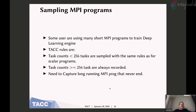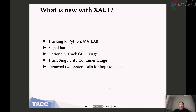I've discovered that people are using short MPI programs to train deep learning engines. Tasks with fewer than 256 tasks have configurable rules — either the same as scalar or different. Tasks with 256 or more are always recorded, because I want to record all long-running MPI jobs. If you're an MPI program with 256 tasks or fewer and you never terminate, Exalt will never see you. I've also added tracking to R. I know how to do MATLAB. I'm still working on Python.